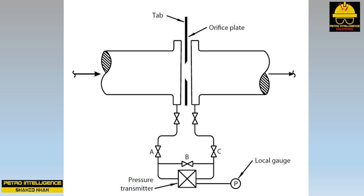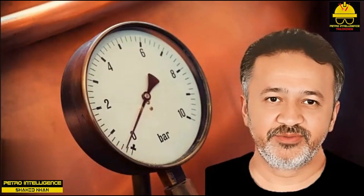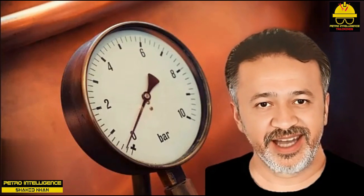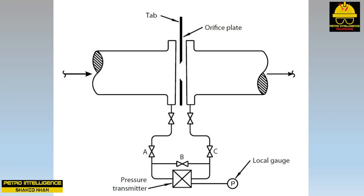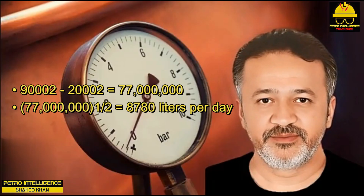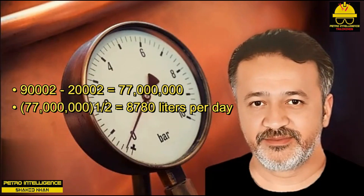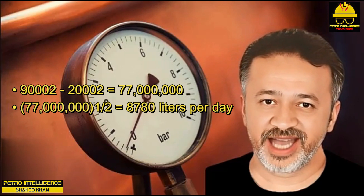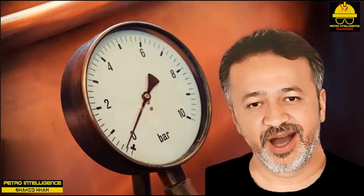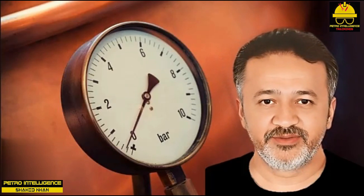Open valve B and close valves A and C, then wait until the flow meter indication stops changing — it should go back to zero if the lines are refilled. Zeroing the flow meter: the indicated flow of acetic acid is 9,000 liters per day. The technician checks the meter by opening valve B with A and C closed — it should read zero but reads 2,000 liters per day. The full range is 10,000 liters per day. The real flow is not 7,000 liters because flow varies with the square root of orifice plate pressure drop. The correct calculation is: √(9,000² − 2,000²) = √77,000,000 = 8,780 liters per day.